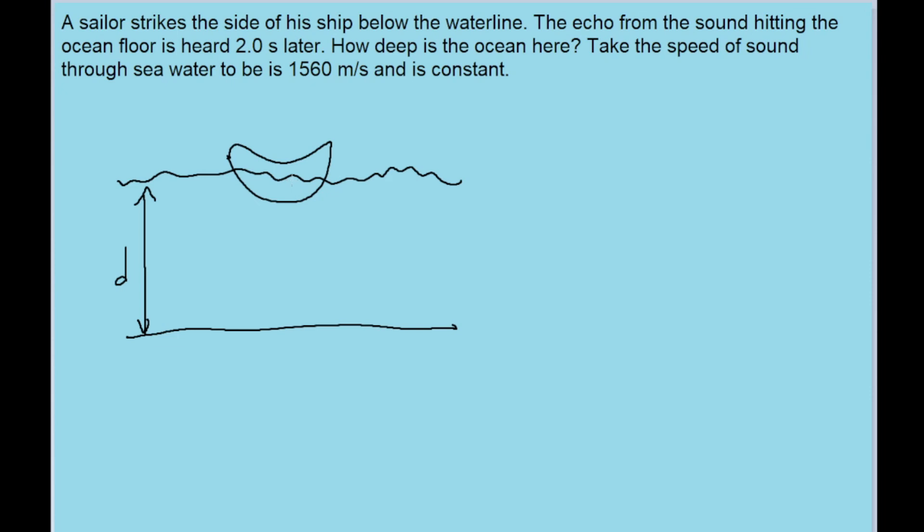The way the sailor has done this is he's hit the side of the boat just at the water level, so the sound from him hitting it is going to travel down to the bottom of the ocean, hit the ocean floor, and then echo back until he hears it again. He hears it at a time of 2.0 seconds after he hits the ship. Now here's what's interesting about this: this time is the amount of time it takes for the sound to go all the way down to the ocean floor, going through the distance d we want to find, and then coming back up. So it actually goes through this distance twice in this time.